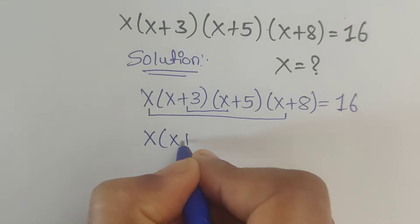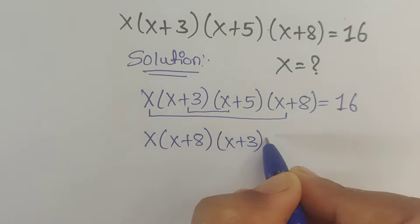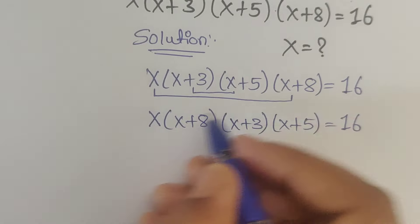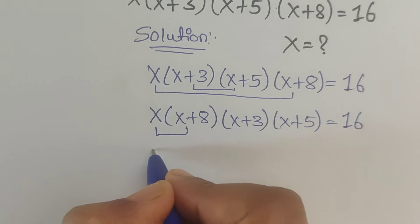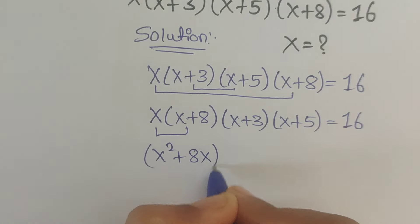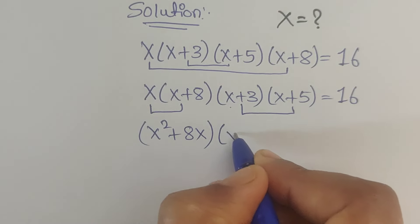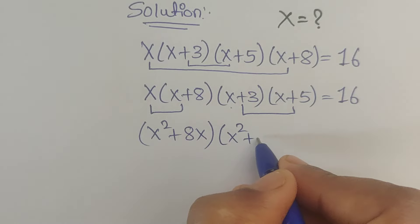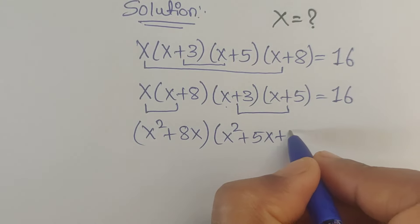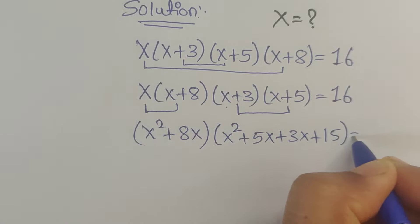x times (x plus 8), and then write the middle terms: (x plus 3) times (x plus 5) equals 16. Now multiply these two pairs. x times x gives x squared, x times 8 gives 8x. Then x times x gives x squared, x times 5 gives 5x, plus 3 times x gives 3x, plus 3 times 5 equals 15. All equals 16.